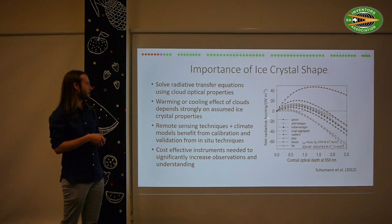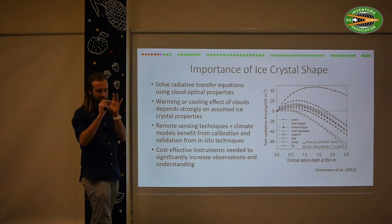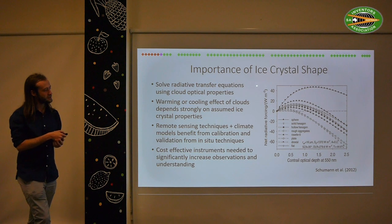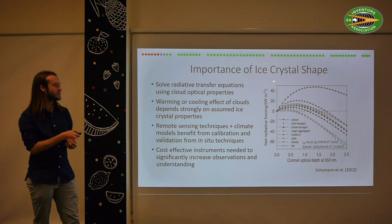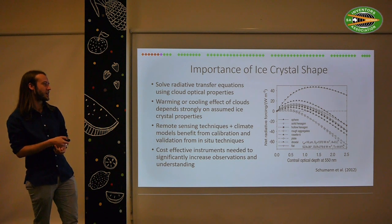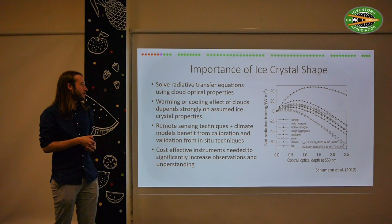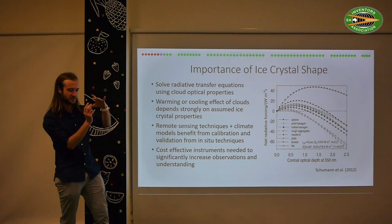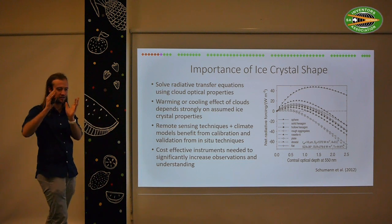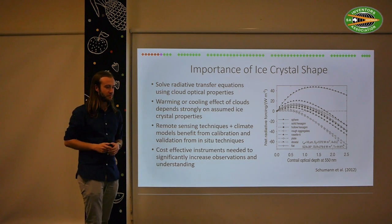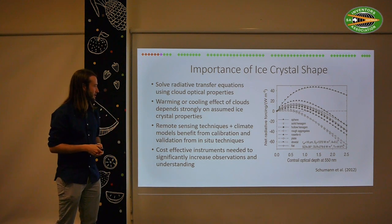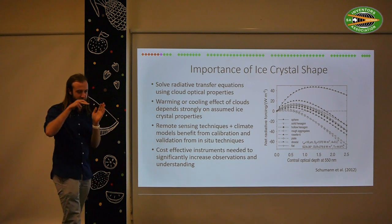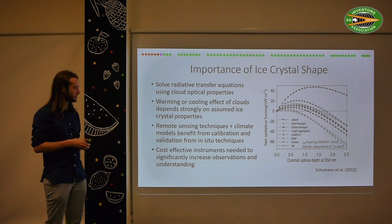Looking at that complexity on the small scale — which is what we're interested in by measuring the ice crystals — it's actually important to get the ice crystal properties right in our models. This plot shows the net heating or warming effect of clouds in a climate model as a function of what shape you choose to model them as. Clouds can go from a net warming to a net cooling effect just by changing the ice crystals from hexagonal to irregular in shape. Even that slight change in microphysical properties will completely change predictions for the global heat budget.